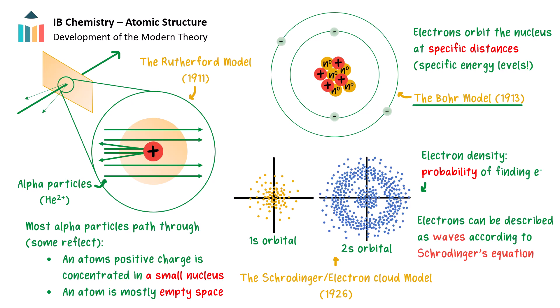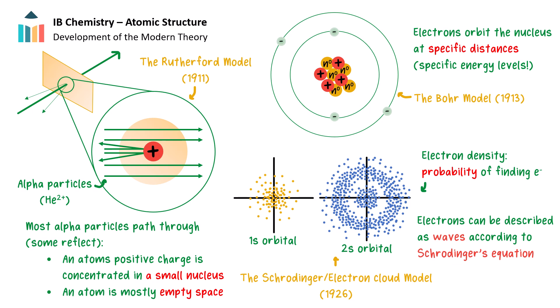Niels Bohr further refined this model by suggesting in 1913 that electrons orbit the nucleus at specific distances and with specific energies. This model works well, but suggests that the electrons orbit the nucleus at specific radii. In 1926, Erwin Schrödinger showed that this is not really the case. The Schrödinger equation describes the distribution of electrons around the nucleus as waves. Electrons in each energy level are more likely to be found in some positions than others, producing a well-defined cloud of electron density around the nucleus. This is the most accurate model of atomic structure.